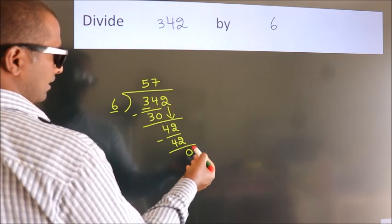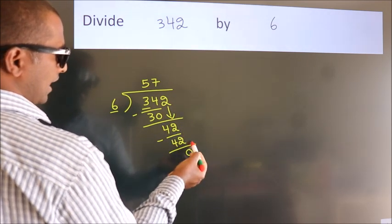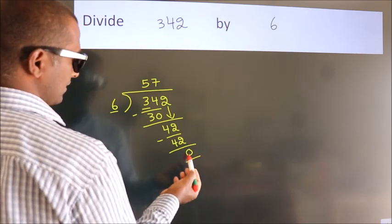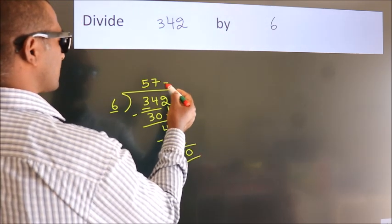After this, no more numbers to bring down and we got remainder 0. So this is our quotient.